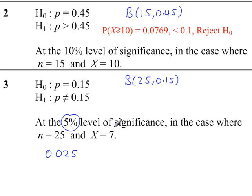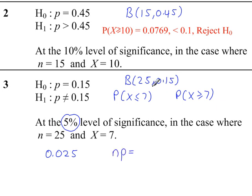This is the value we're going to test, but we need to know whether we're going to do P(x ≤ 7) or P(x ≥ 7), and that's based on the mean of this binomial distribution. We do n times p to work out the mean, which is 3.75. The x value is 7, and 7 is more than 3.75, so we're going to test P(x ≥ 7).